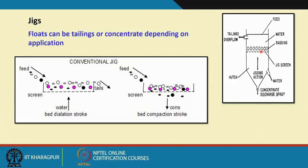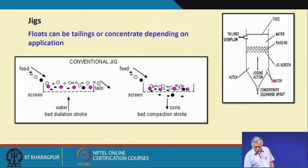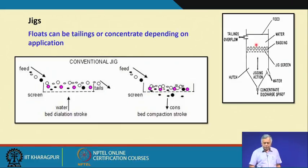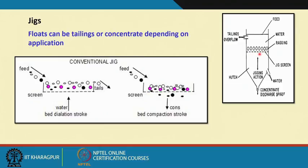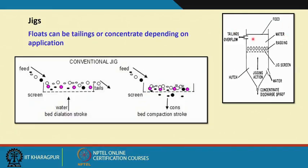That is how you can separate tailings from concentrates. You also have additional water injected to ensure sufficient upward velocity. This controls the expansion rate — that is, the fluidization velocity, which is the upward velocity of the water. If the water velocity is too high, even the lighter particles may overflow uncontrollably. So you have to control the upward water velocity such that only the lighter particles go out through the tailing discharge gate.